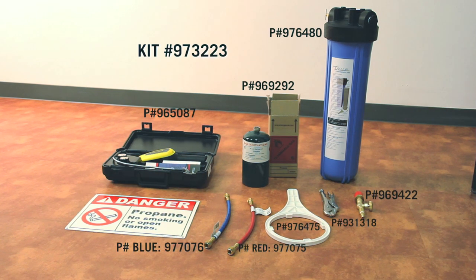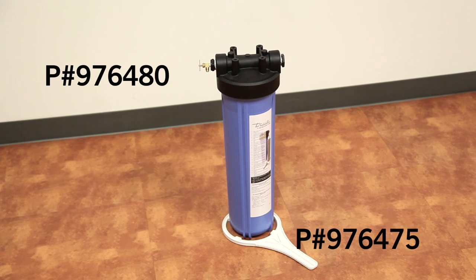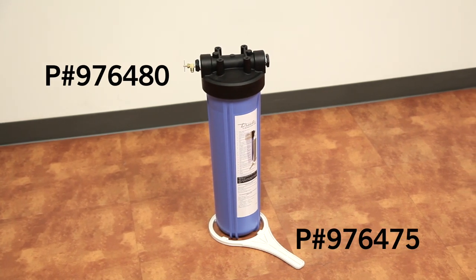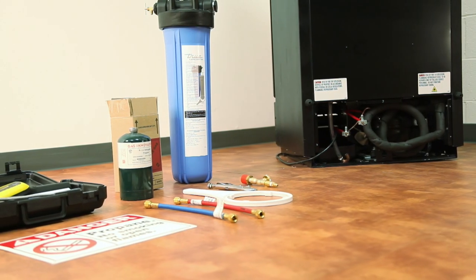Also included in the photo is the recovery system, which includes a tank with a filter pre-installed and the tank wrench, which can be ordered separately through our parts department.